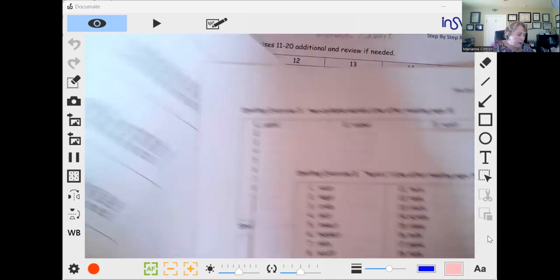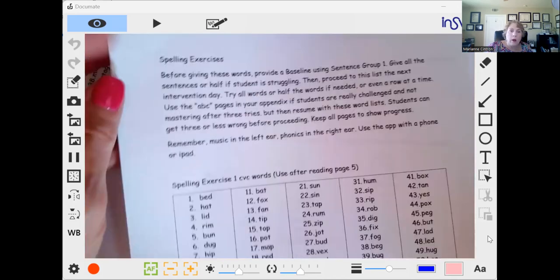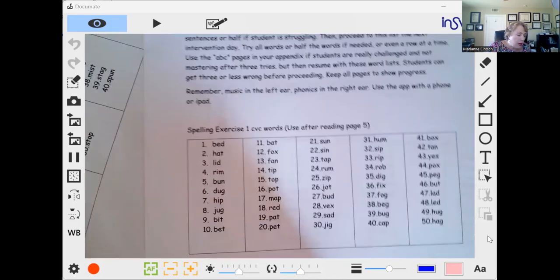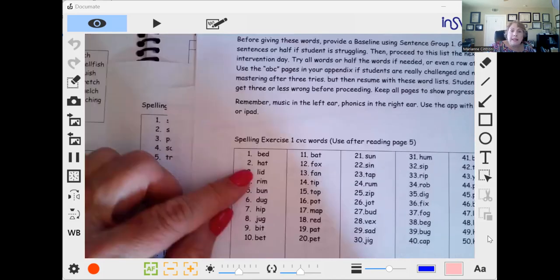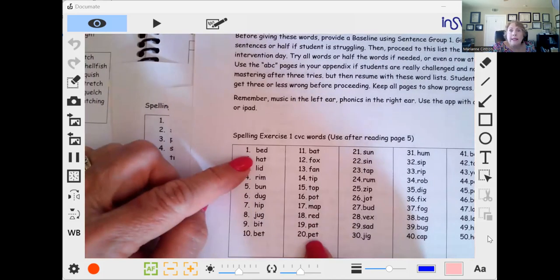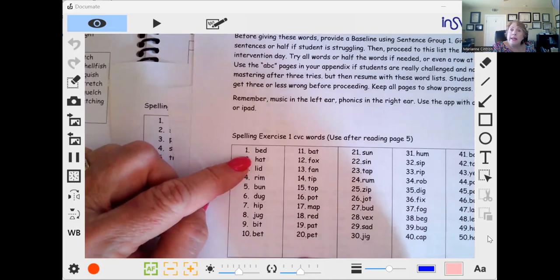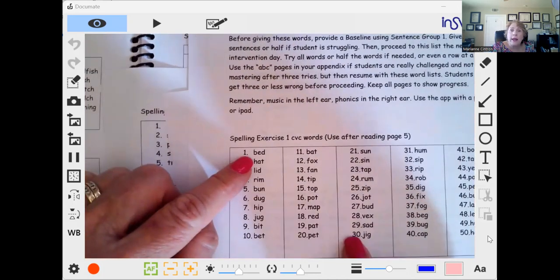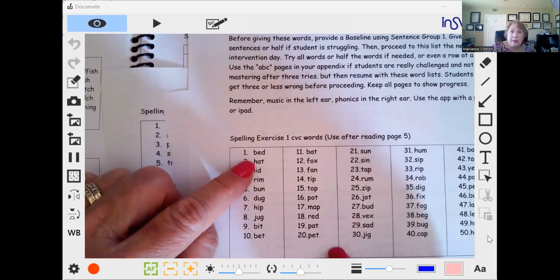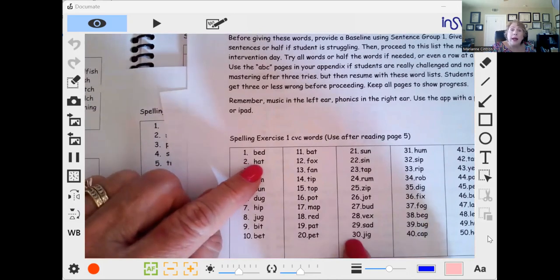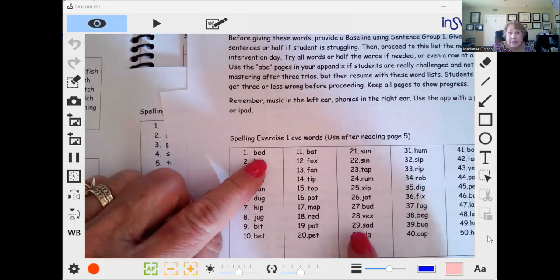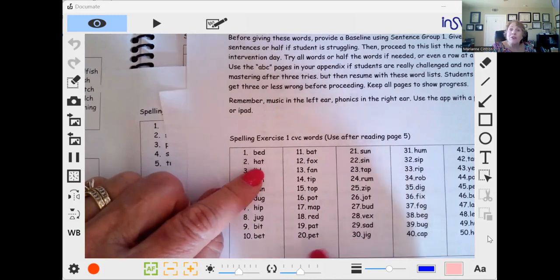So for example, exercise one, you can have your child listen and then write the beginning sound. Day two, have your child write the beginning and vowel sound. On day three, have your child write the ending sound. On day four, have your child write the whole word.